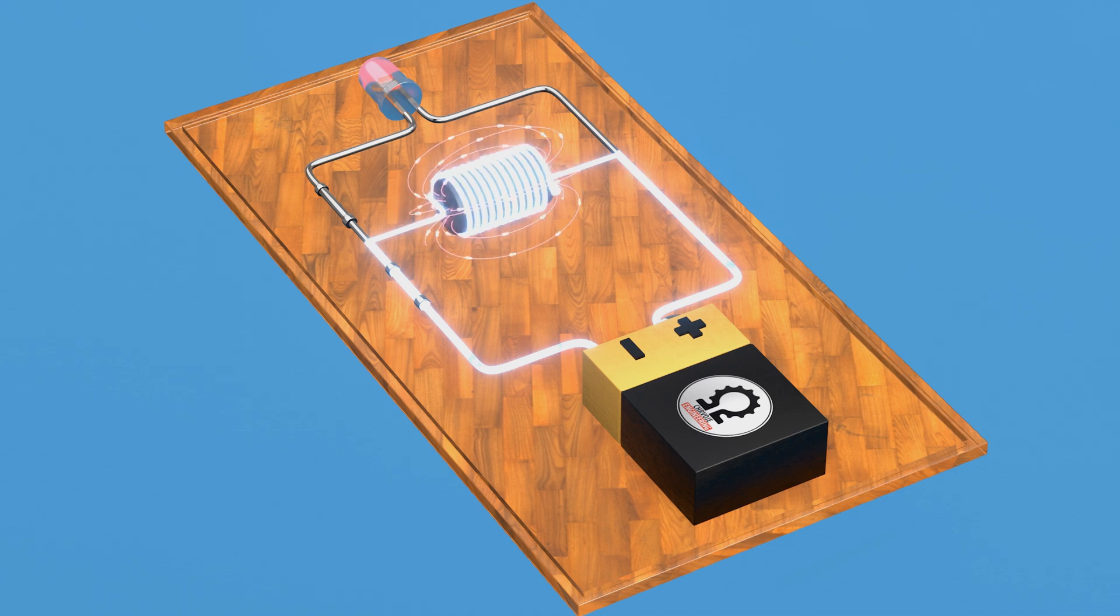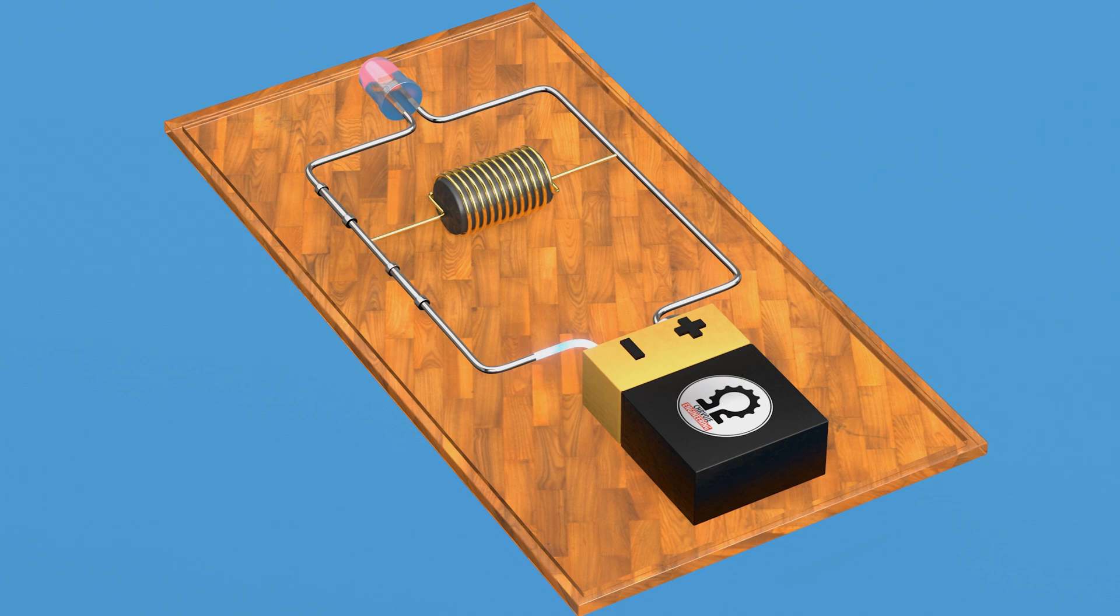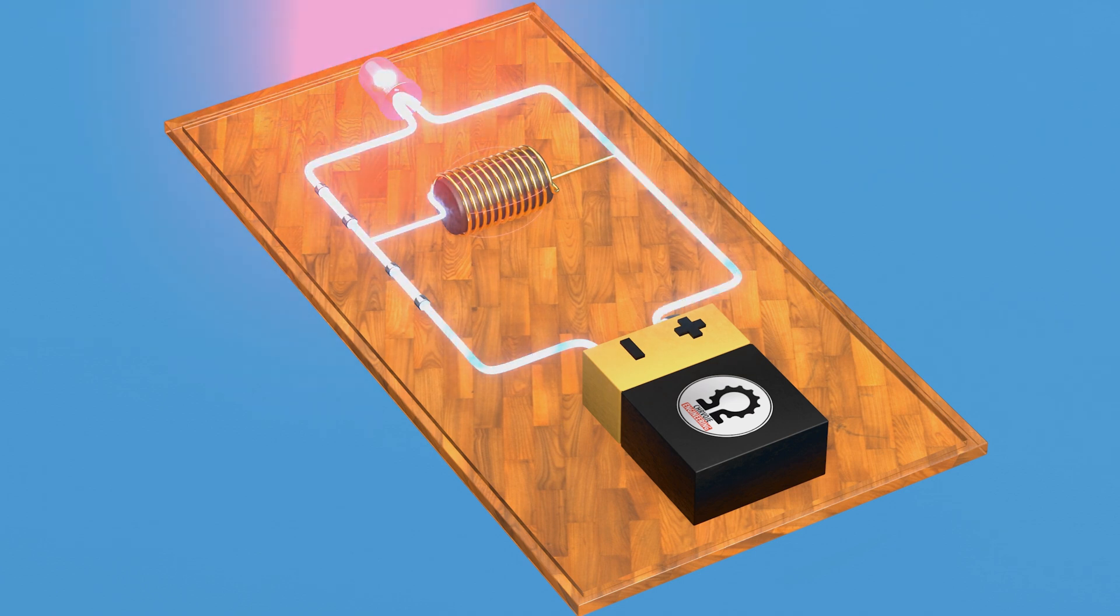When the circuit is opened, the stored magnetic field in the inductor transforms into electrical energy. This energy encourages the flow of electrons for a short duration. This process illustrates how the inductor interacts with the circuit, resisting and releasing energy.